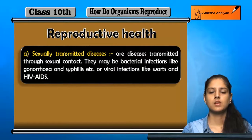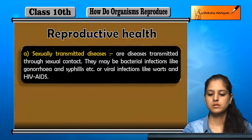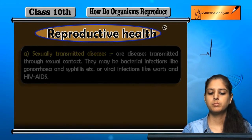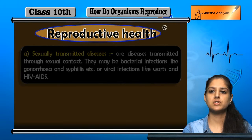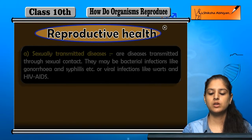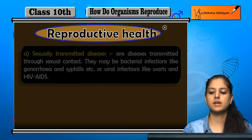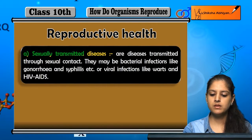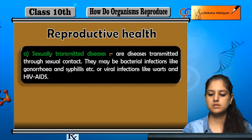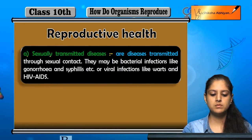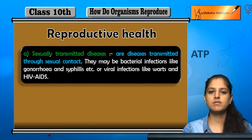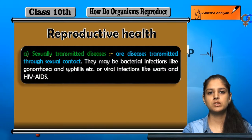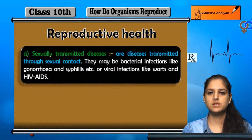The last topic is reproductive health. Reproduction ke baat karte hain - if we talk about reproductive health, sexually transmitted diseases are the diseases transmitted through sexual contact. Sexual contact ki wajay se jo diseases transmit ho jaate hain from one person to the other, unko sexually transmitted diseases kehte hain.